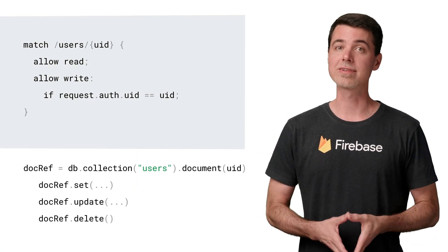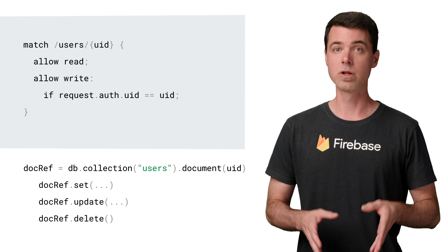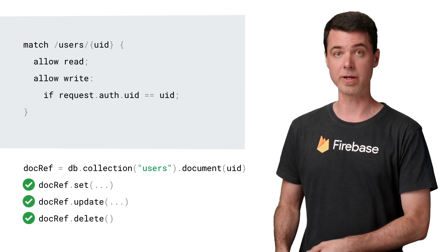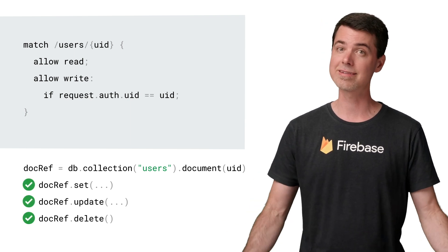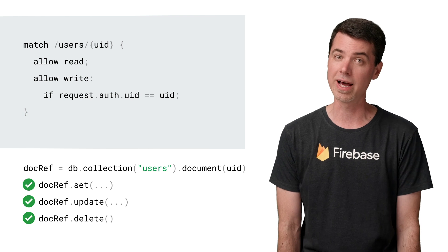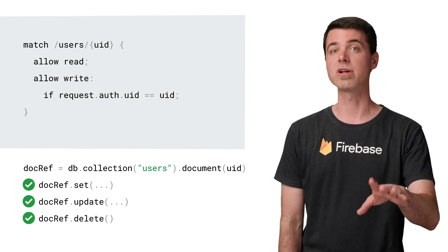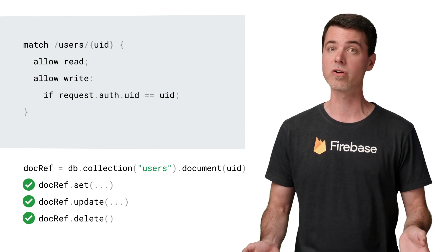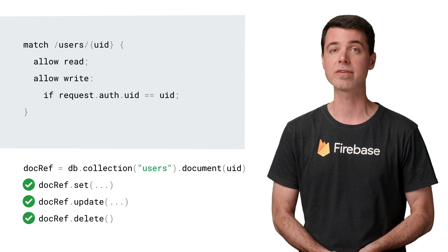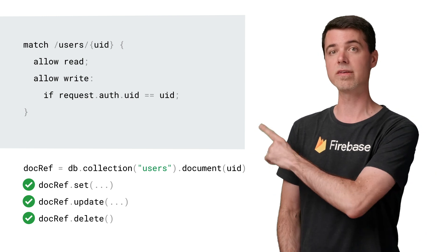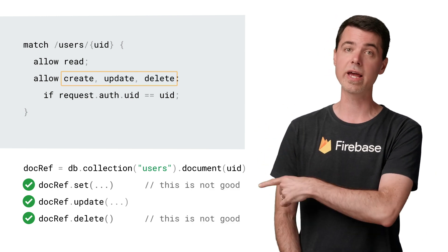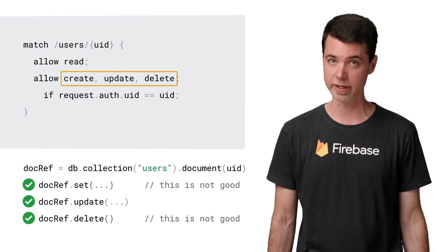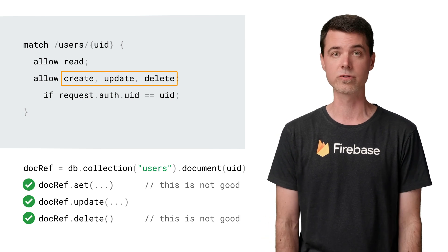With the write access allowed in this rule, the user is allowed to create, update, and delete the document. And as I said, that's more control than I want to allow. Fortunately, write access can be broken down into those three more granular types of access. It looks like this. You can see here that create, update, and delete access can be called out individually in security rules.